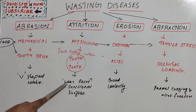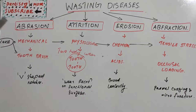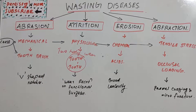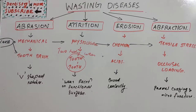Attrition is a physiological two-body wear resulting in wear facets on functional surfaces — a polished surface on the occlusal surface, typically on premolars and molars. Both upper and lower teeth lose tooth substance simultaneously. Attrition can also occur when a natural tooth opposes an artificial tooth made of porcelain or metal. People with a coarse diet or developmental defects are also predisposed.